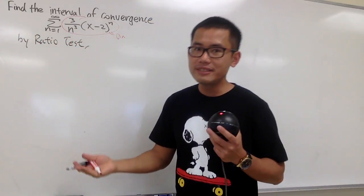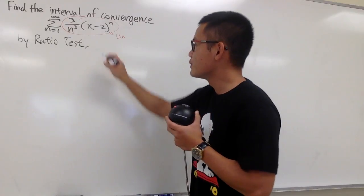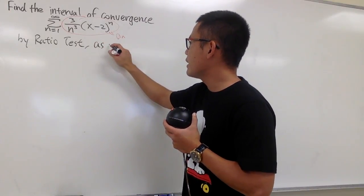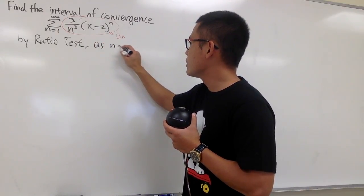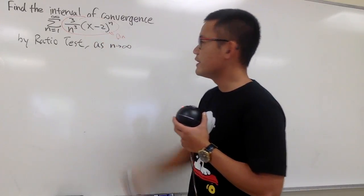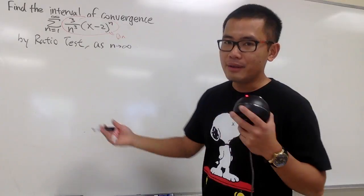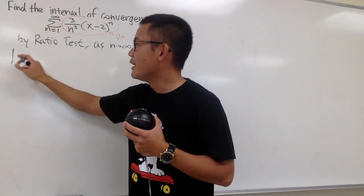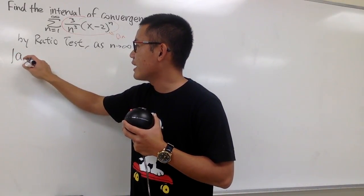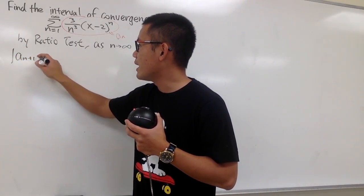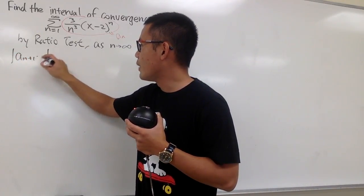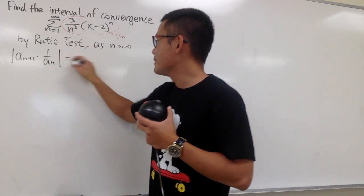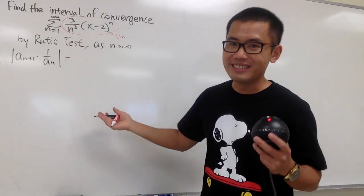The first thing that we do is take the limit as n goes to infinity. Of course, you put down the absolute value, and you have to check a_{n+1} times 1 over a_n. This is just the usual business.